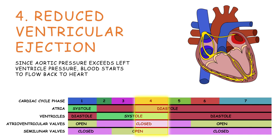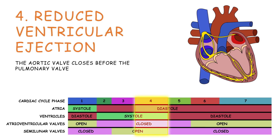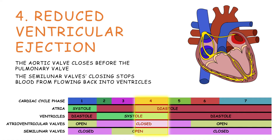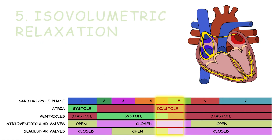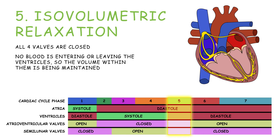Since aortic pressure exceeds the pressure in the left ventricle, blood starts to flow back into the heart. Once the pressure in the ventricles falls sufficiently, the semilunar valves close. Note that the aortic valve closes before the pulmonary valve. The semilunar valves closing stops blood from flowing back into the ventricles. Now all four valves are closed, so no blood is entering or leaving the ventricles and the volume within them is being maintained — hence the term isovolumetric ventricular relaxation.